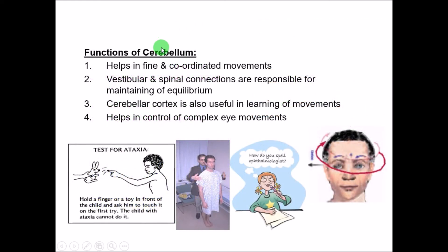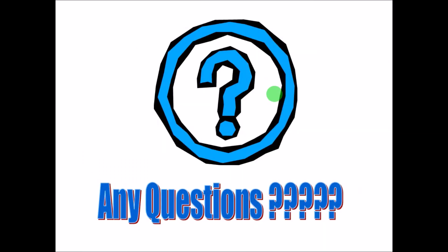Finally, the four important functions of the cerebellum are: fine coordinated movements, maintenance of equilibrium, learning of new movements, and complex skilled movements. This is all about the cerebellum in brief for revision. For more detail, refer to the main lecture. Thank you very much.